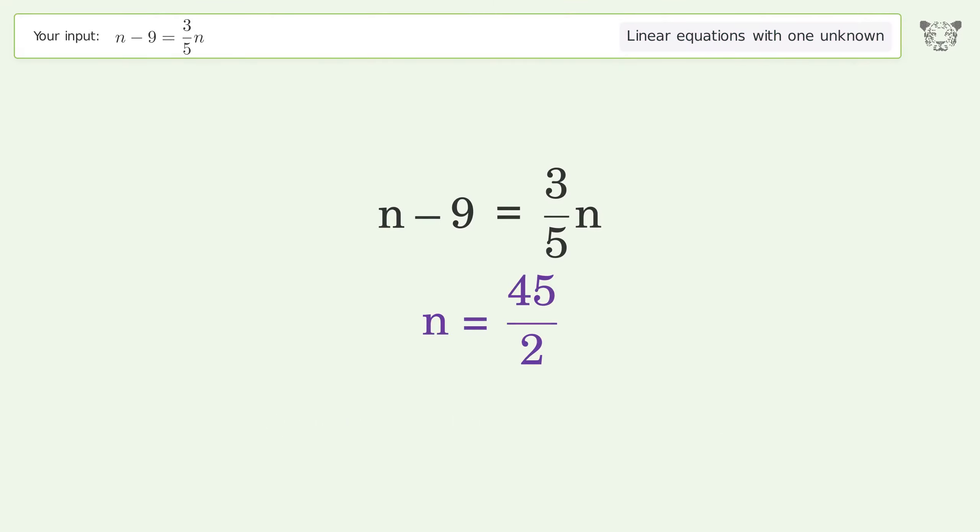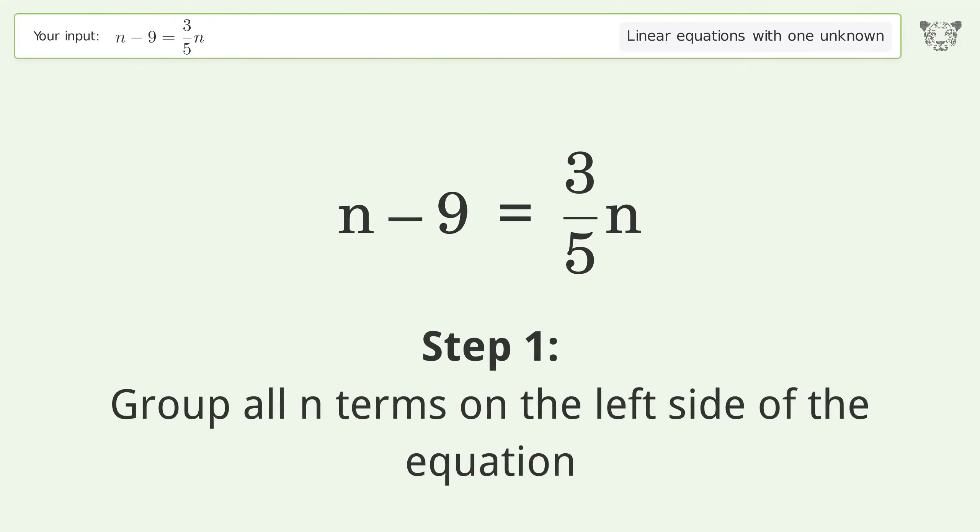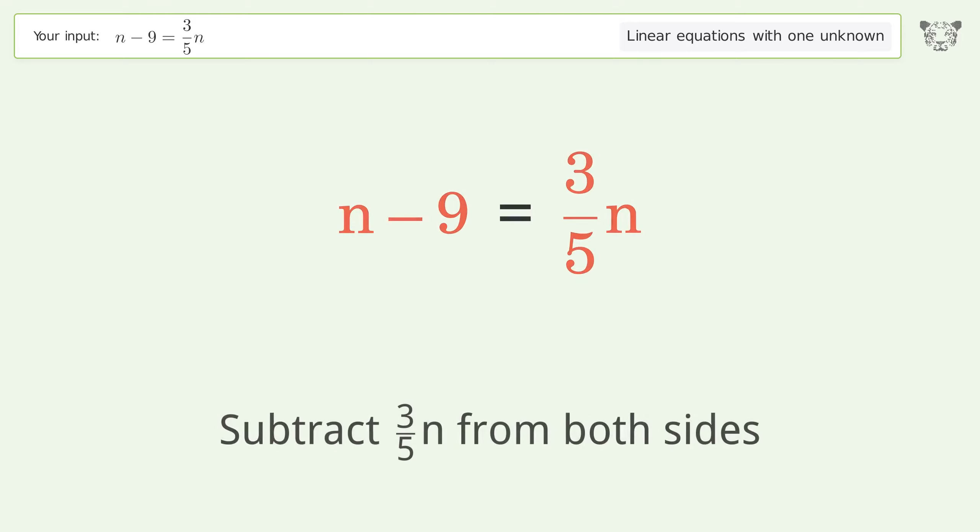You asked Tiger to solve this. This deals with linear equations with one unknown. The final result is n equals 45 over 2. Let's solve it step by step. Group all n terms on the left side of the equation.